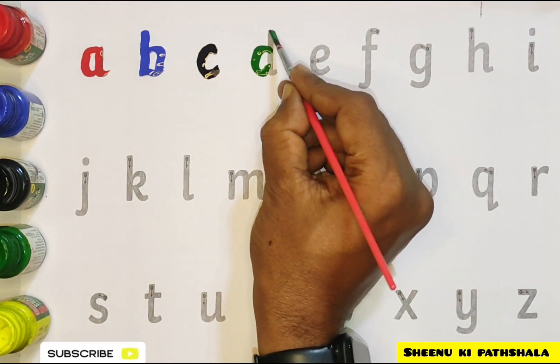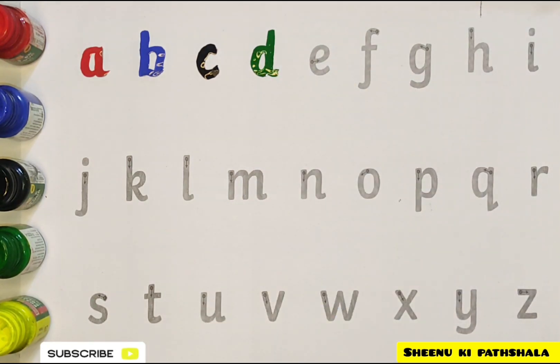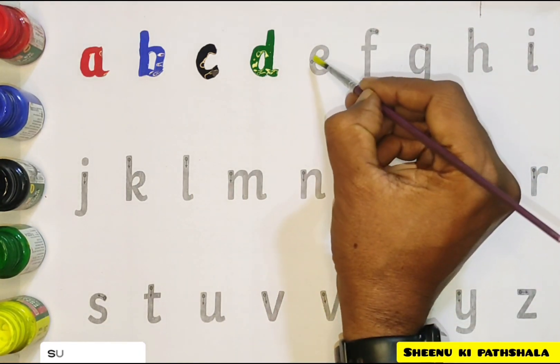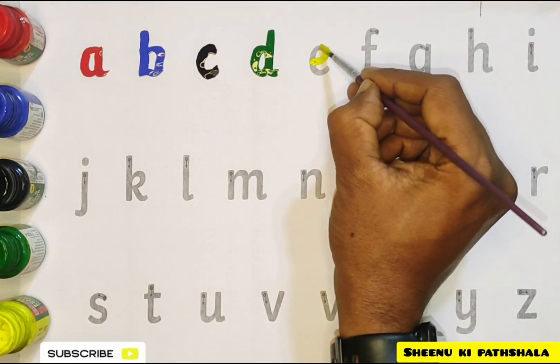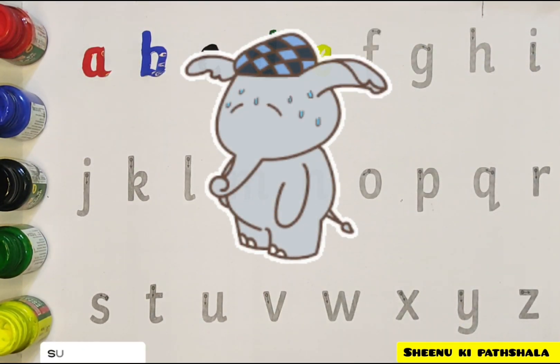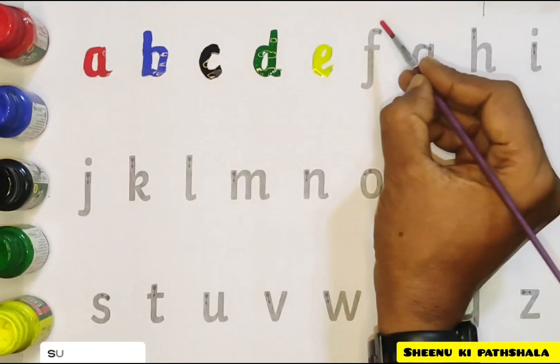D for dog, yellow color. E for elephant, red color.